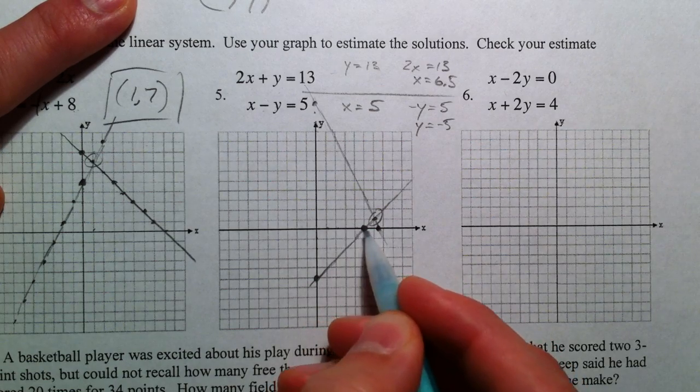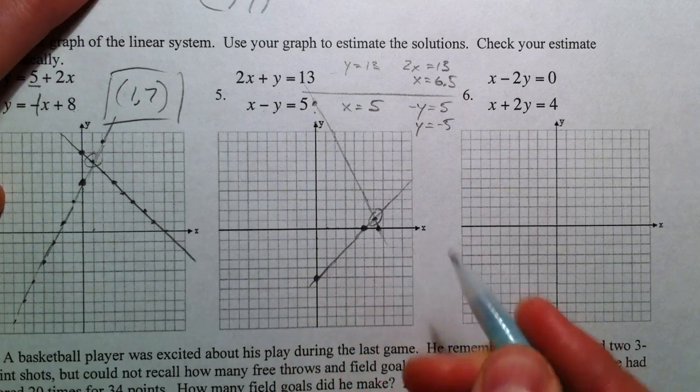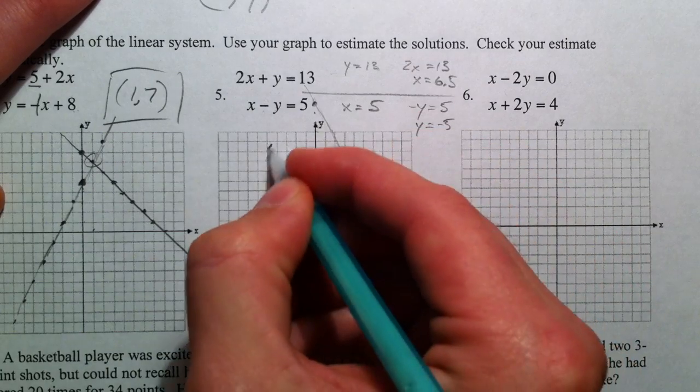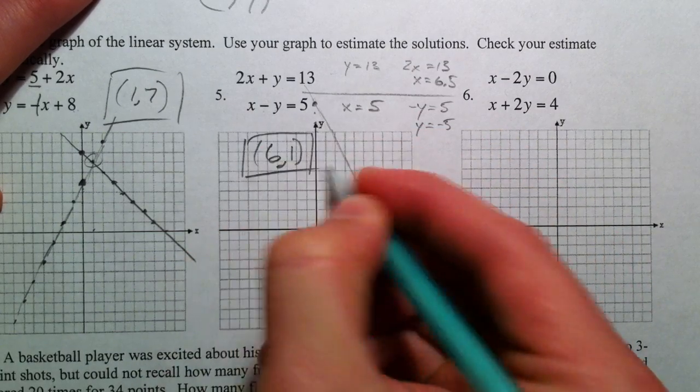So that point is 1, 2, 3, 4, 5, 6, comma 1. So that's the point of intersection.